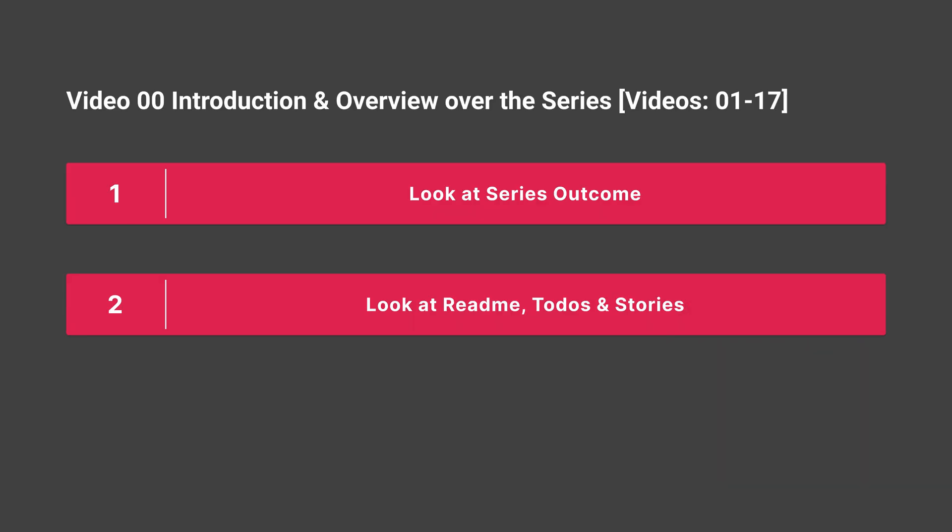For this video, we first look at the series outcome for video 17 — so what was implemented in videos 1 to 17 and how it looks at the end. Then we look at our readme file in the code, and then at the to-do's, because we have a to-do file and for every video there is a story that is also available in GitHub. So let's start.